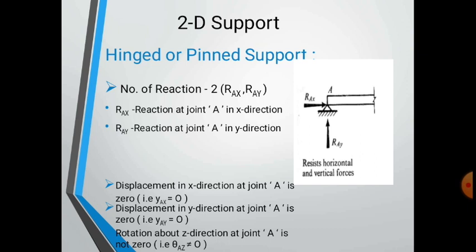For the hinge support, there are two reaction components: R x and R y in the horizontal and vertical directions respectively. Delta x and delta y at joint A are zero, but the rotation is not zero, since the joint can rotate. So the rotation at a hinge support is not zero.